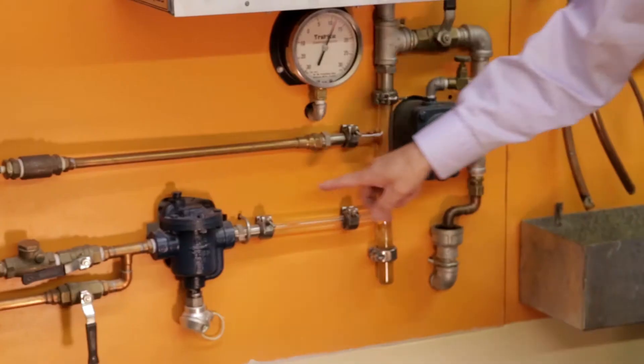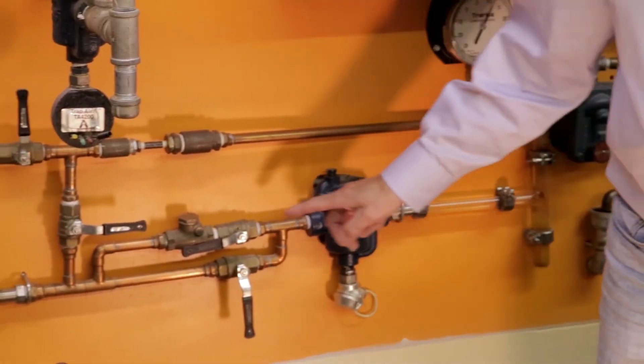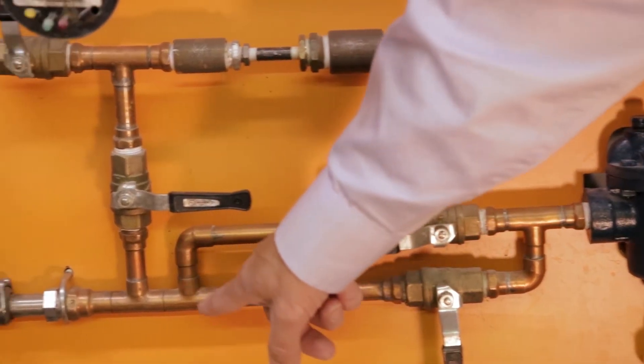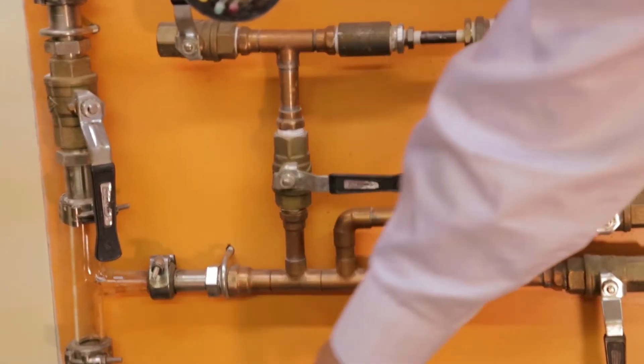It goes down. We've got a dirt pocket here, our primary steam trap here, and then it goes to a check valve. From there, it goes to our atmospheric condensate return system.